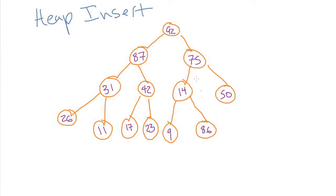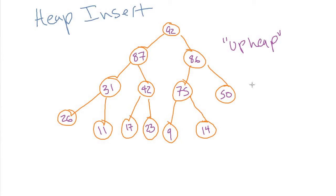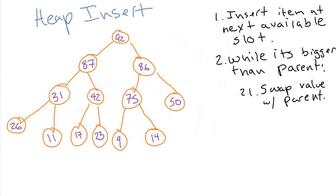Let's say we put in a new value like 86. We've satisfied the balance and left-aligned rule, but now 86 is greater than its parent 14, which is a problem. So we do what's called up-heaping — we swap the 86 and 14 around. Now 14 isn't above 86 anymore, but 86 is still less than its parent 75, so we need to up-heap again and swap 86 with 75. Now everything is good because 86 is in fact less than its parent 92. The algorithm: insert at the next available slot, then while the value is bigger than its parent, up-heap by swapping with the parent.